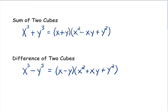Once you have the binomial, you can always get the trinomial part. The first term of the trinomial is: take the first part of the binomial and square it — that's the same in both cases. The sign of the middle term is always opposite the sign inside the binomial. To get the middle term, multiply the two somethings together, giving minus xy or plus xy. The sign of the last term is always a plus, and the last term is the second part of the binomial squared.